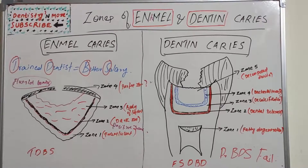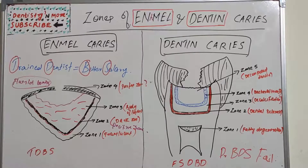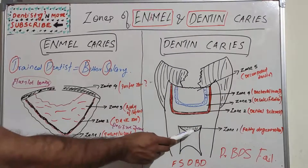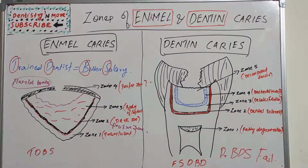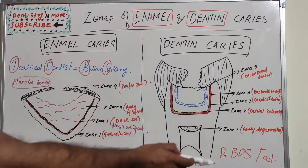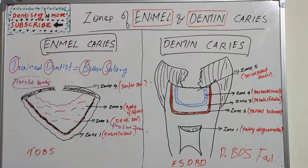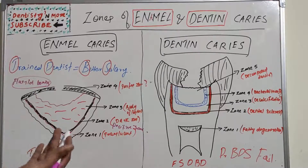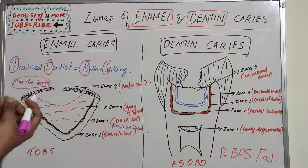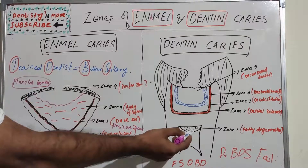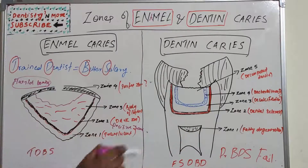Moving on to the zones of dentinal caries: Zone 1, starting from the pulpal side, is known as normal dentine or the zone of fatty degeneration. It is formed by degeneration of the odontoblastic processes. The dentine is otherwise normal and produces sharp pain on stimulation, as it is closest to the pulp.